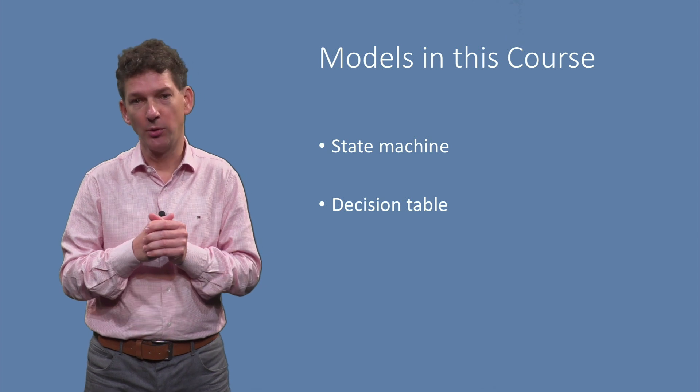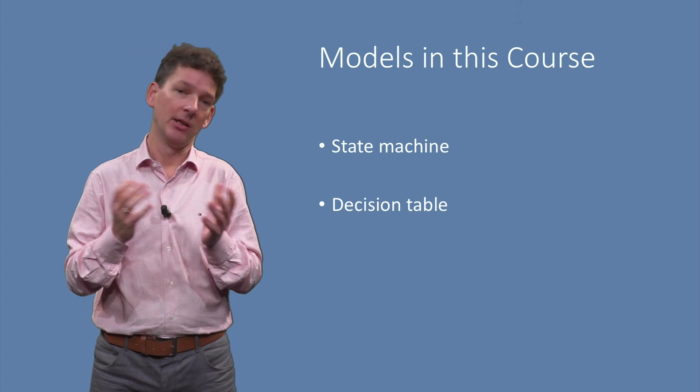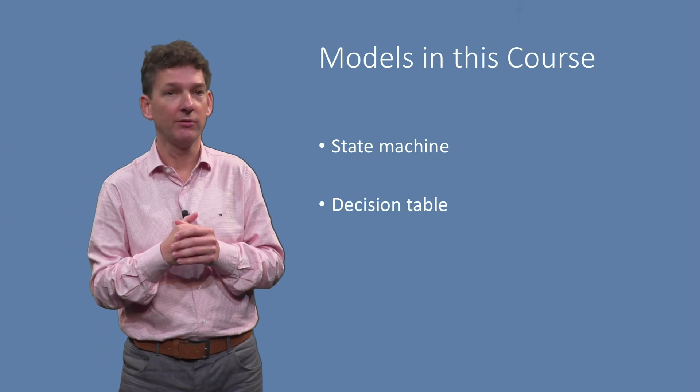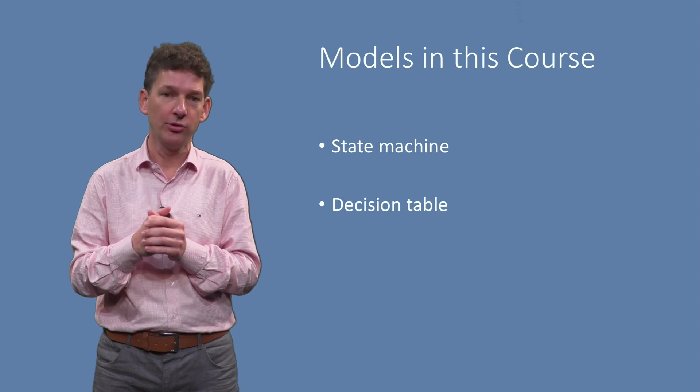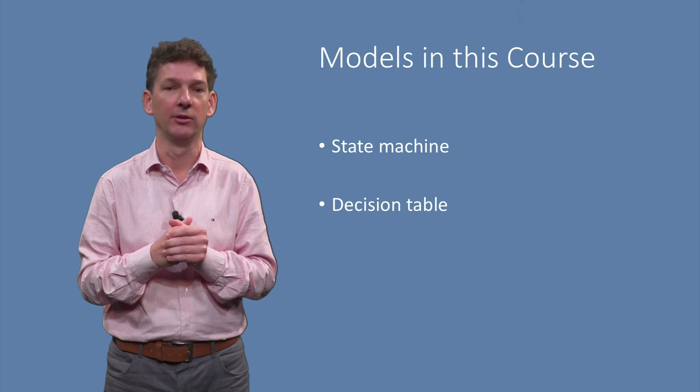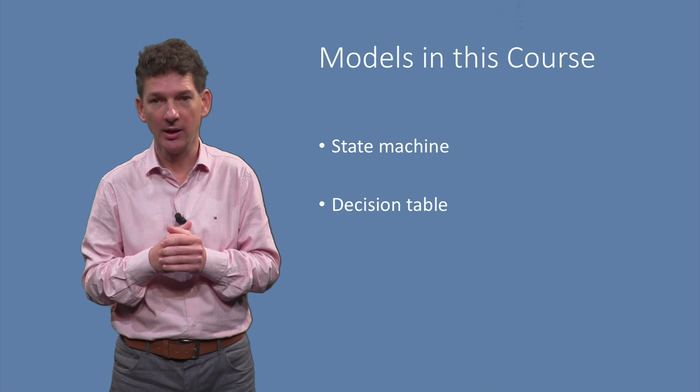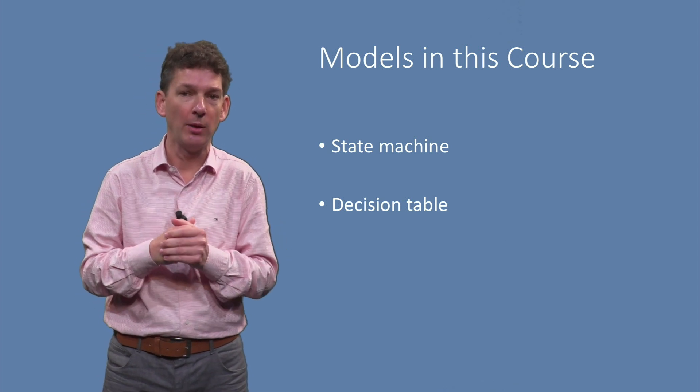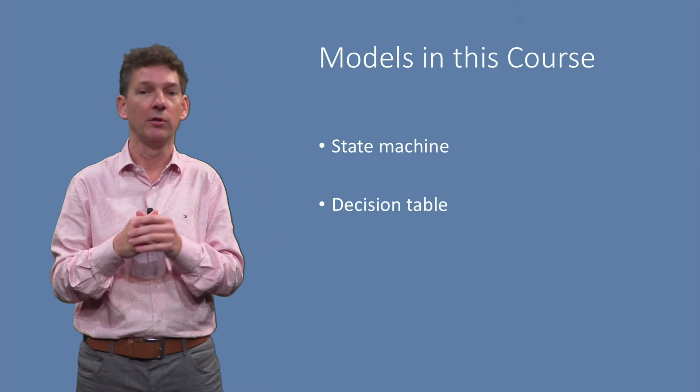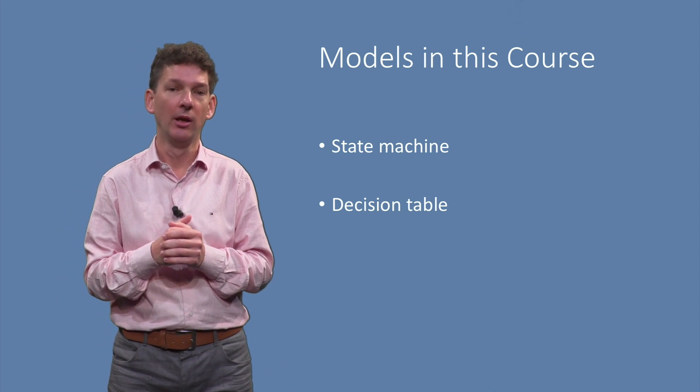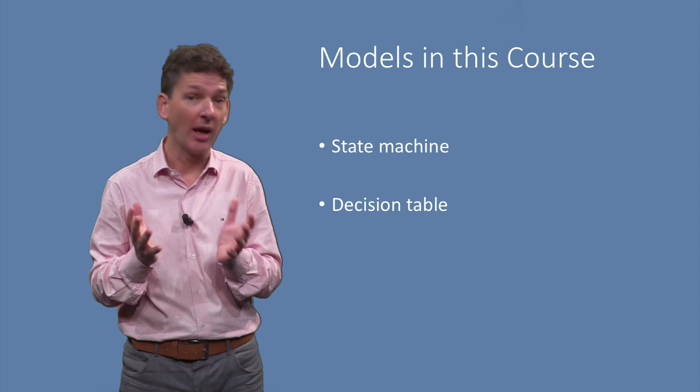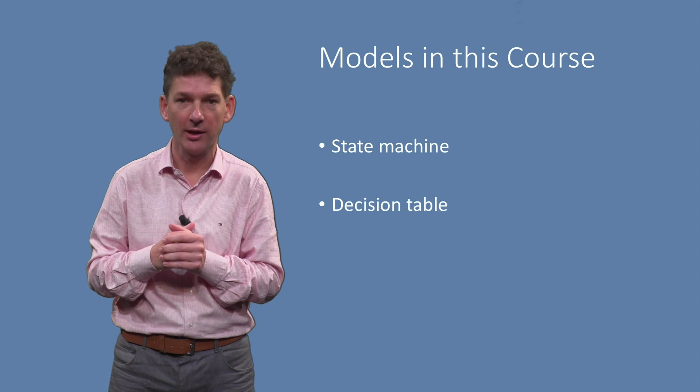Our second type of model is the decision table. Decision tables can be used whenever combinations of multiple inputs determine a system's behavior. A typical example here are payment plans for mobile phones, in which a number of user choices determine the monthly subscription fee, and the features you as a user can enjoy.